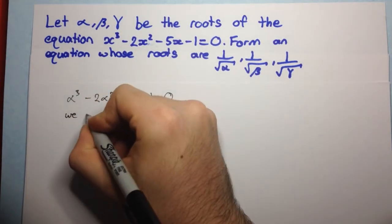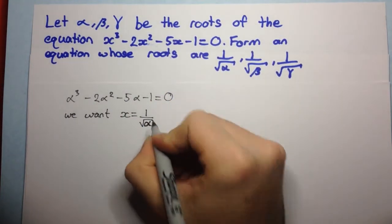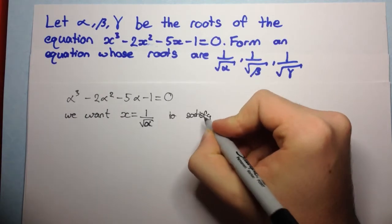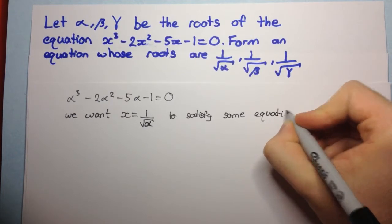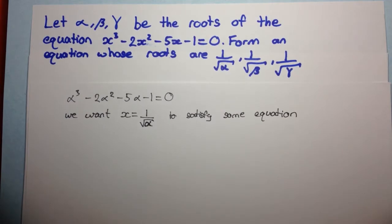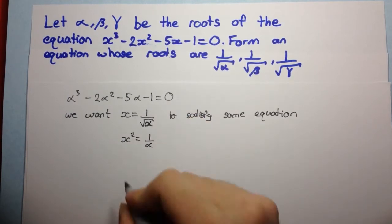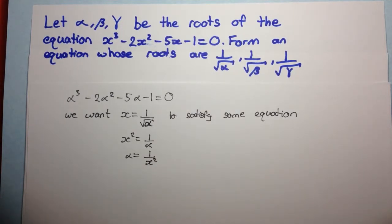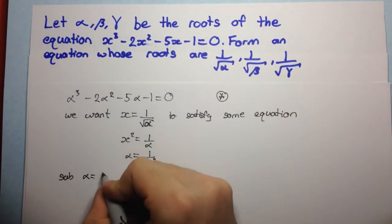Now we want x equal to 1 over the square root of alpha to satisfy some equation. We don't know what the equation is yet, but we want it to satisfy that equation. So if we simplify this to get alpha in terms of x, instead of x in terms of alpha, we can square both sides and rearrange to get alpha as the subject, giving us alpha equals 1 over x squared. Let's call this equation a star.